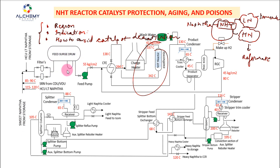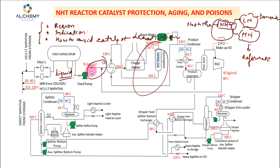The total feed comes to the FSD, from where the liquid feed is sent via feed pump to the combined feed exchanger and charge heater. Hydrogen is added prior to the combined feed exchanger to form the combined feed. If there are impurities in this liquid feed, they will go to the NHT reactor and cause catalyst deactivation. Through sampling, we can determine if there is carryover of metal contaminants, inorganic components, severe sulfur, or organic compounds.